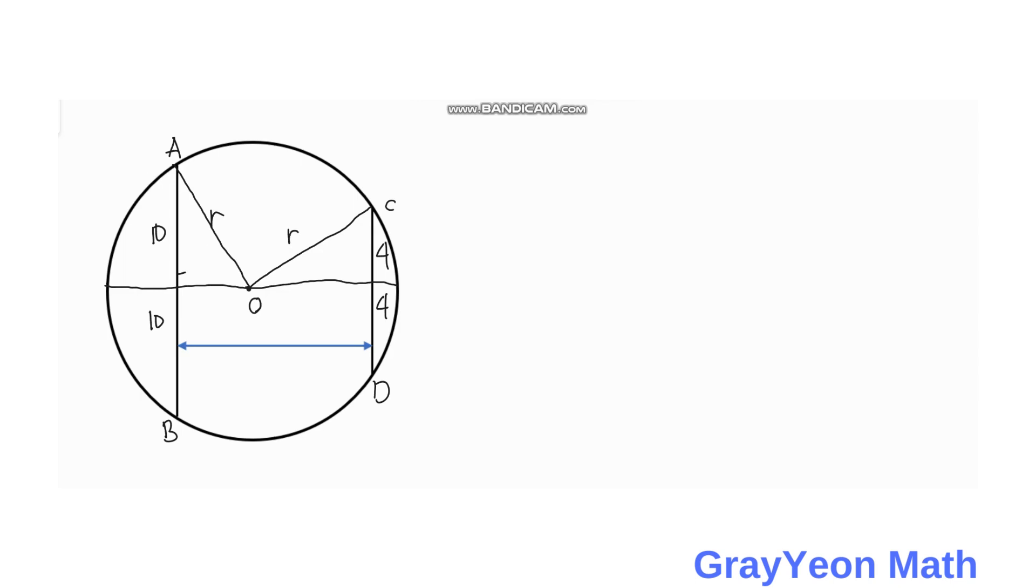You will be forming a right triangle and another right triangle here and you can form equations based from that right triangles by using Pythagorean theorem. Since we know that the whole length of the distance between the two chords is 12, and if we label this distance from E to O as X, then this would be 12 minus X.